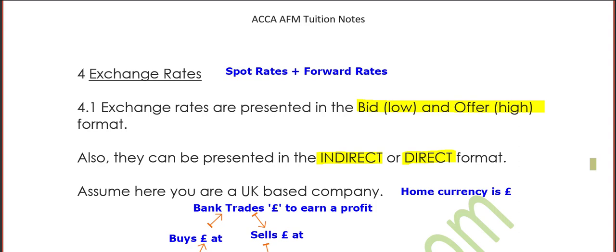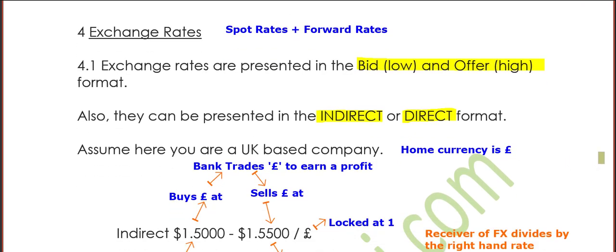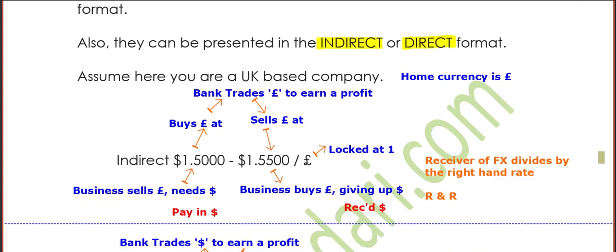The indirect presentation is where the currency locked at one is your home currency. The direct is the alternative, where the foreign currency is locked at the value of one. In the exam, you just have to read the question very, very carefully. So let's start with the indirect presentation.